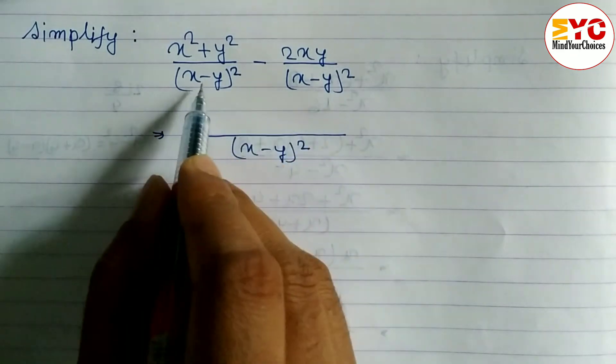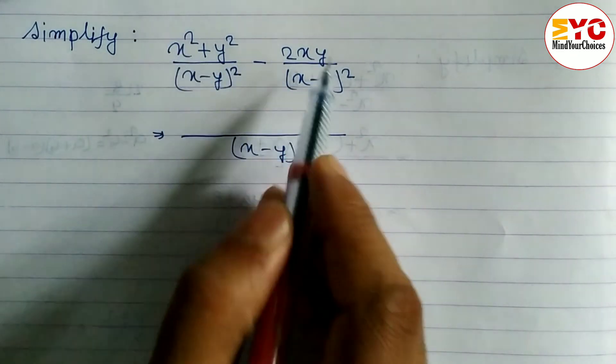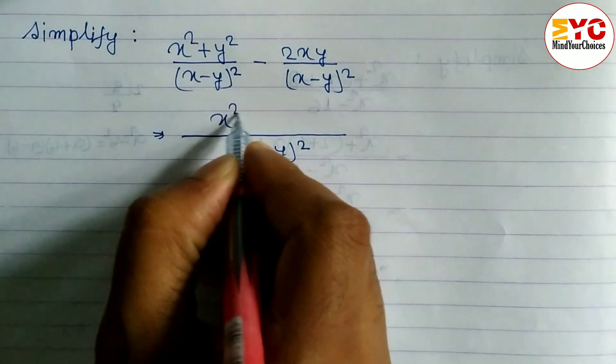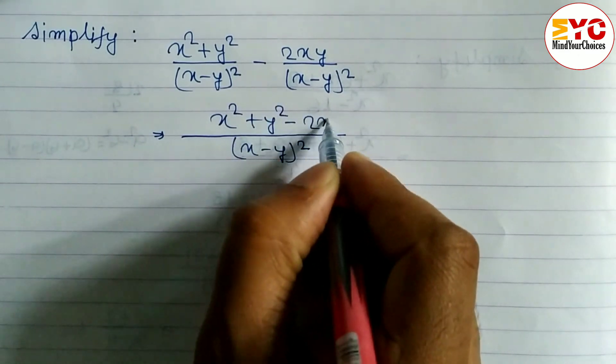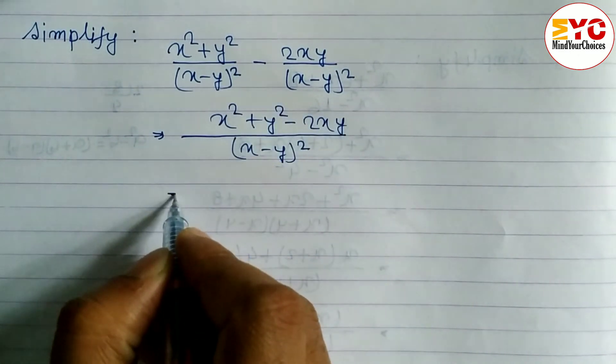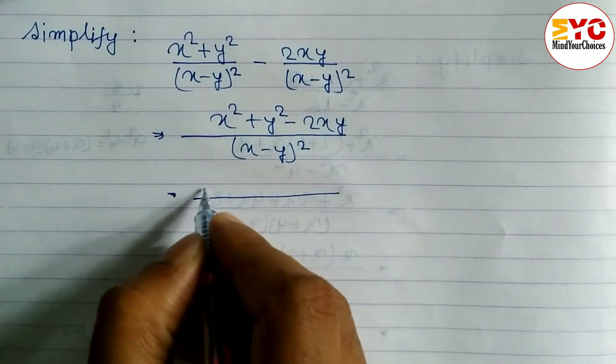If denominator is same, simply we have to write down numerator only. So we can write here x squared plus y squared minus 2xy. Now we have to arrange this. While arranging, what we have to write: x squared minus 2xy plus y squared by x minus y whole squared.